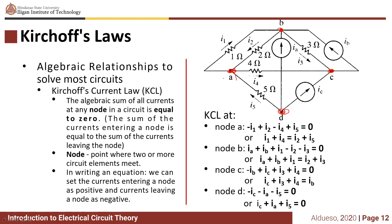If we apply KCL at node A, there are four elements connected. I1 is leaving the node, so we write the equation as negative I1, plus I2 because I2 is entering the node, minus I4 because I4 is leaving the node, plus I5, equals zero.